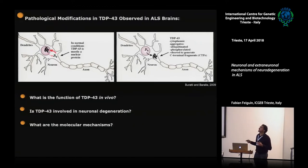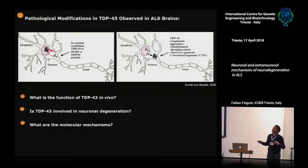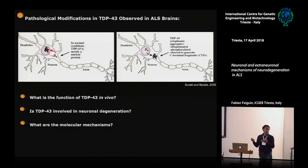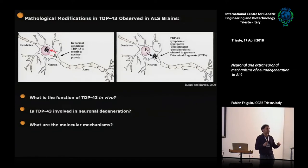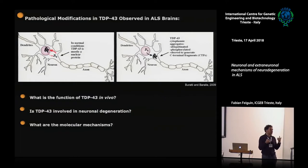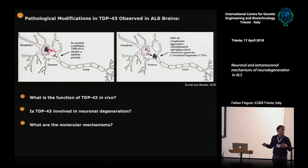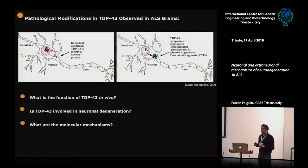What was found in patients is that the protein normally resides in the nucleus. In patients, it appears cytoplasmic, aggregated, phosphorylated — with many modifications in the cytoplasm — but depleted from the nucleus. The basic questions at the beginning of this project were: what is the function of this protein, and whether or not it is involved in the degenerative process, and by which mechanism.